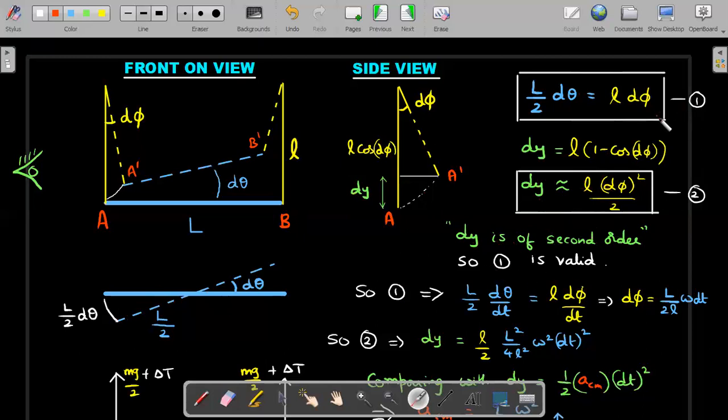This is very, very important. Even though this L by 2 d theta is in horizontal plane and there will be a vertical displacement added to it to produce this A A prime, which I wrote as L d phi. I hope this point is very, very clear to you.